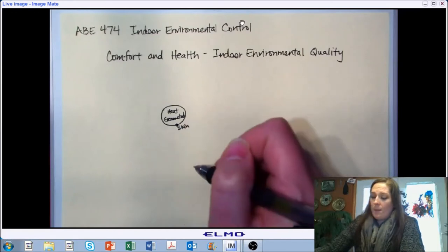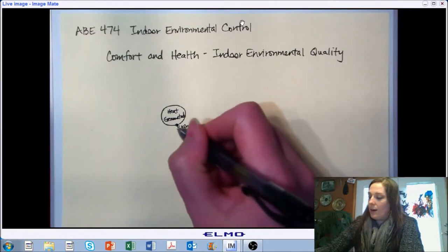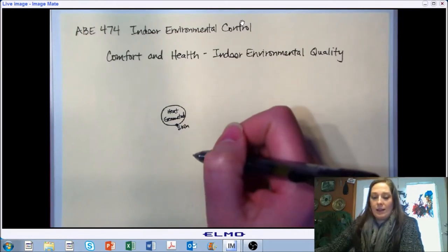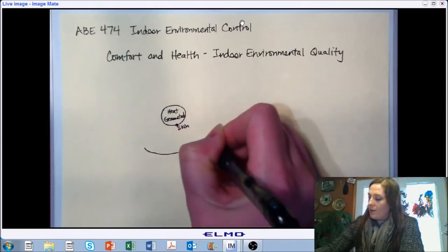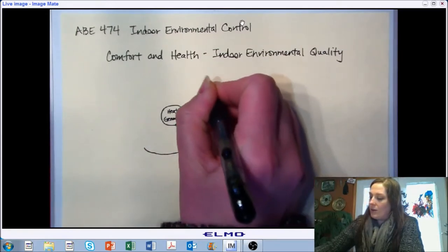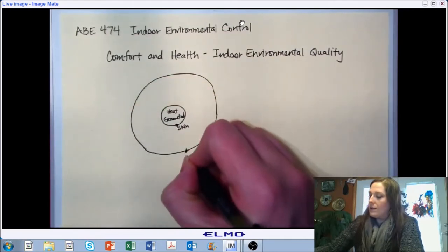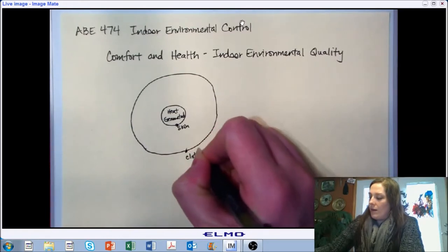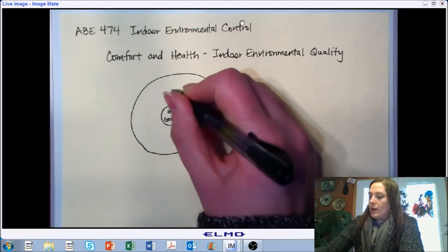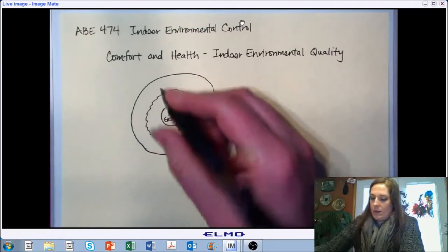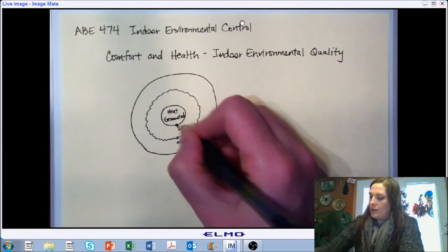Now we typically wear a covering over our skin. Depending on the conditions we may have more or less covering, so let's represent that covering as another circle — this is going to signify our clothing. That clothing also traps some air in between which acts as an insulator, so this symbolizes air trapped between our skin and our clothing.